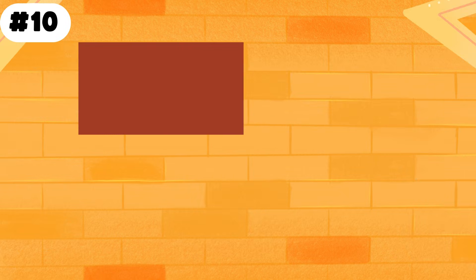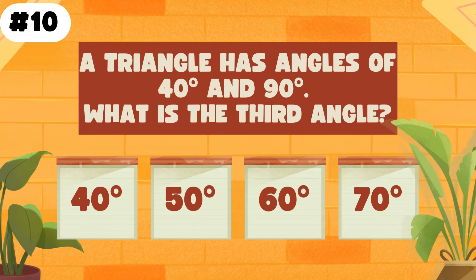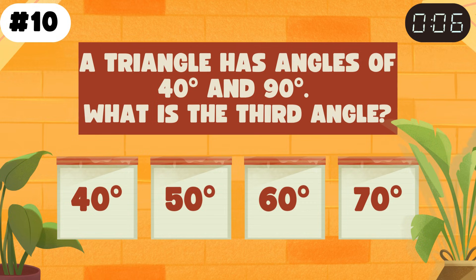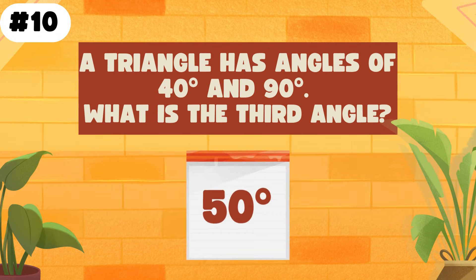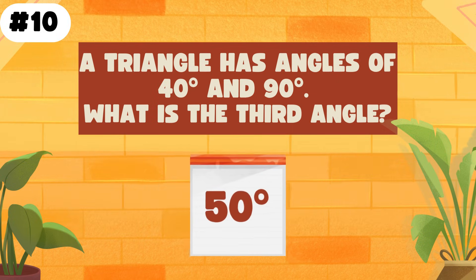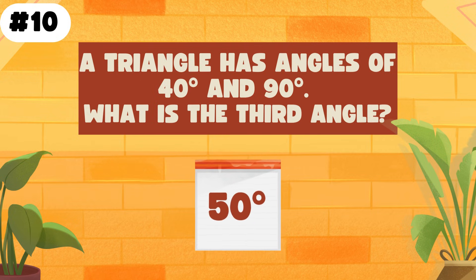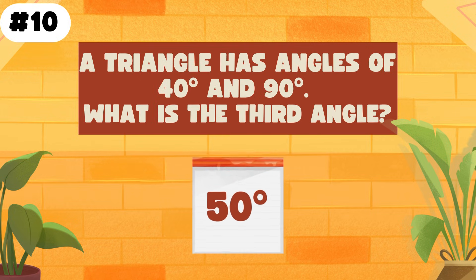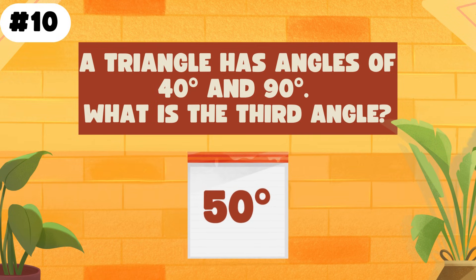A triangle has angles of 40 degrees and 90 degrees. What is the third angle? Correct. The answer is 50 degrees. To find the third angle of a triangle, you add the two known angles together and then subtract the sum from 180 degrees.